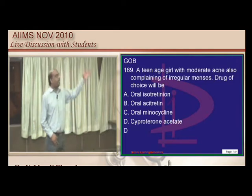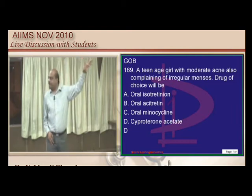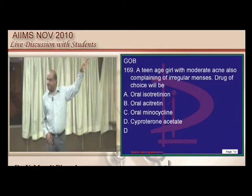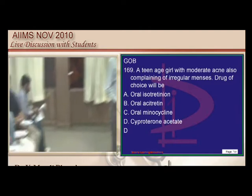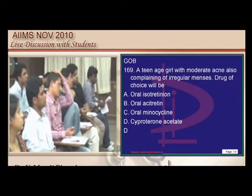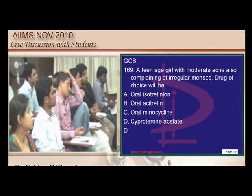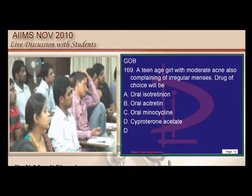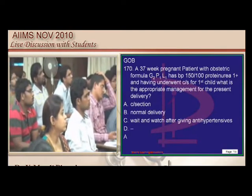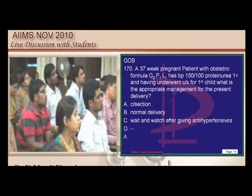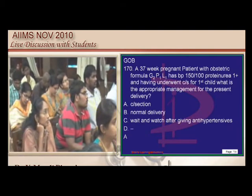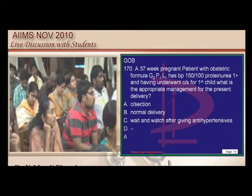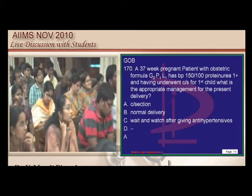Doxycycline can only take care of acne but not irregular menses. Isotretinoin has the same problem — it does not address the hormonal cause.